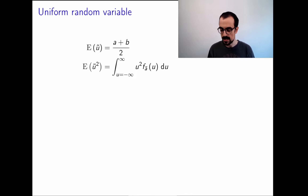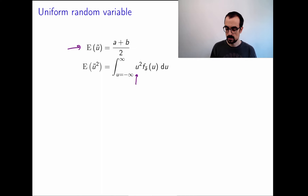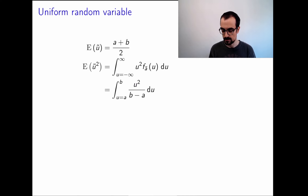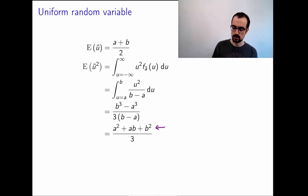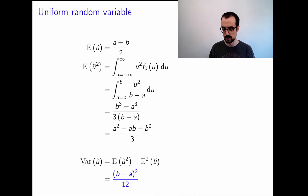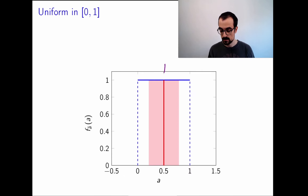Now let's consider a uniform random variable. We know the mean. To derive the mean square, we integrate u² from a to b against the uniform PDF. The antiderivative of u² is u³ divided by 3, so we plug that in and do the algebra. After subtracting the squared mean, we end up with the variance equal to (b - a)² over 12. Taking the square root gives the standard deviation.